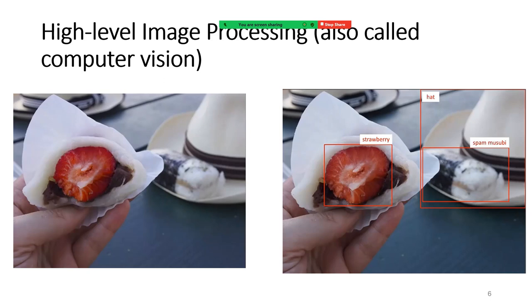High-level processing is more like how our visual cortex works. To summarize: low-level image processing — input is the image, output is the image. Mid-level image processing — input is the image, output is the edge or the background-extracted image.